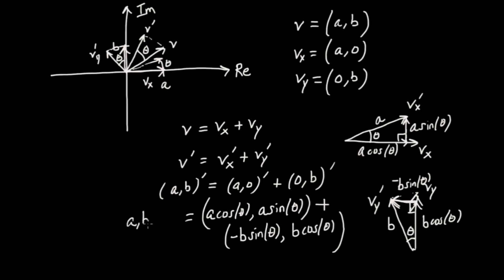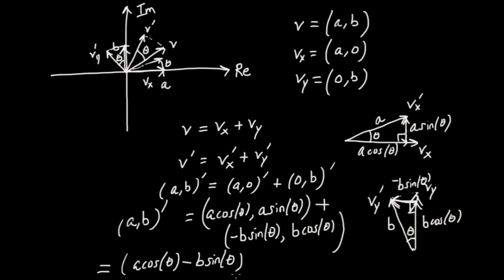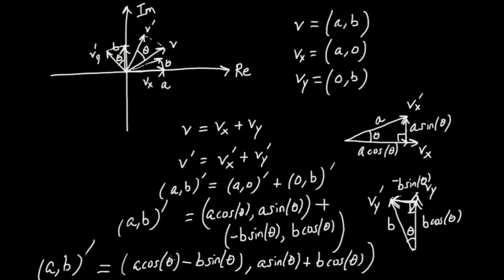Combining these two vectors, the new first component is A cosine theta minus B sine theta, and the new vertical component is A sine theta plus B cosine theta. So the rotated version of AB, which I called AB prime, rotated by theta in the counterclockwise direction, is (A cos θ − B sin θ, A sin θ + B cos θ).